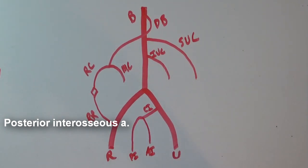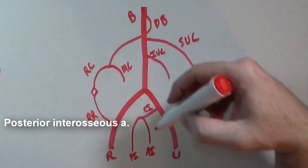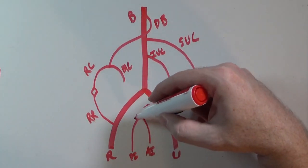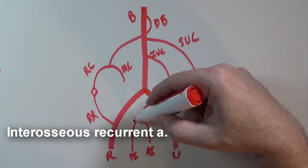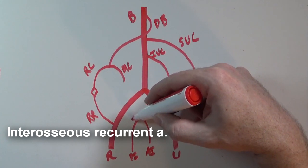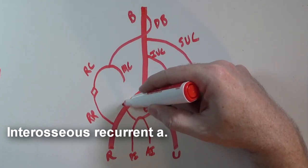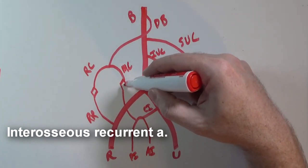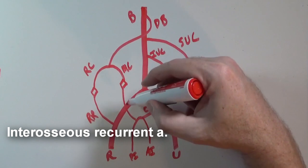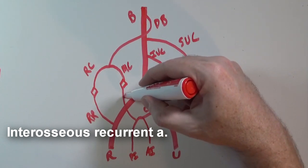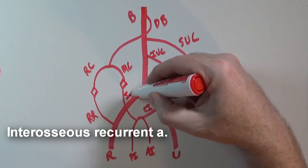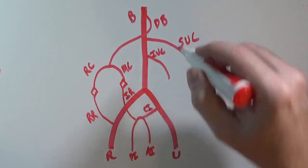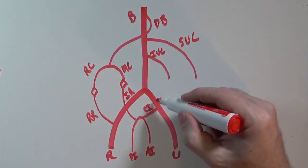Branching off the posterior interosseous artery is an artery that runs up behind the elbow and anastomoses with the middle collateral artery — this is the interosseous recurrent artery (IR).